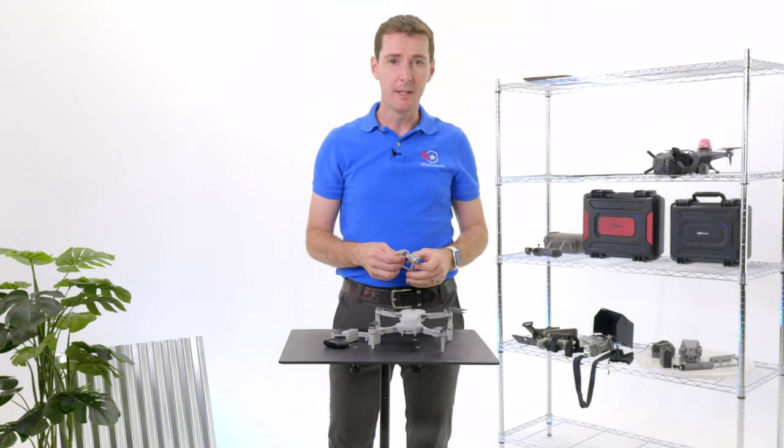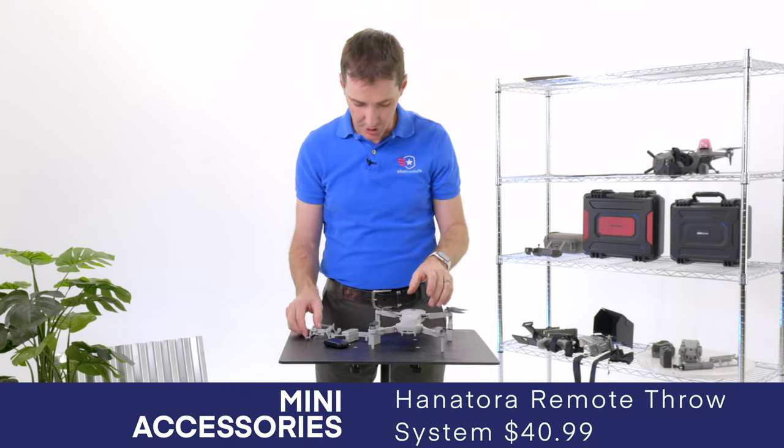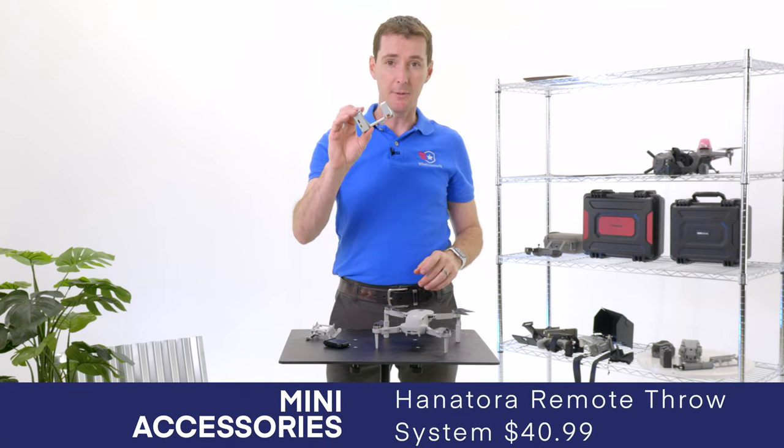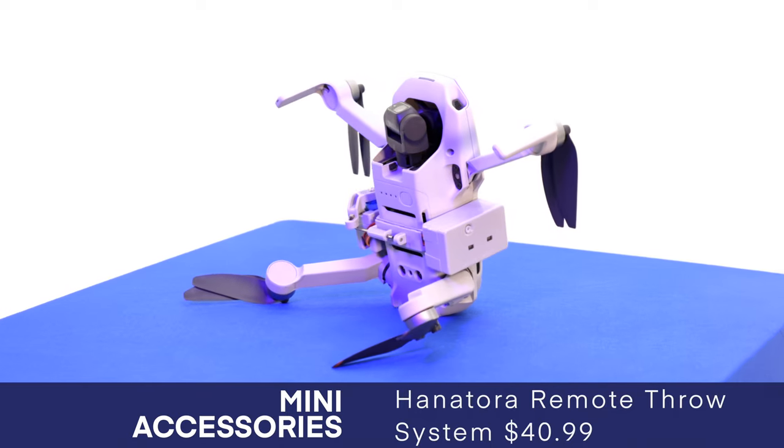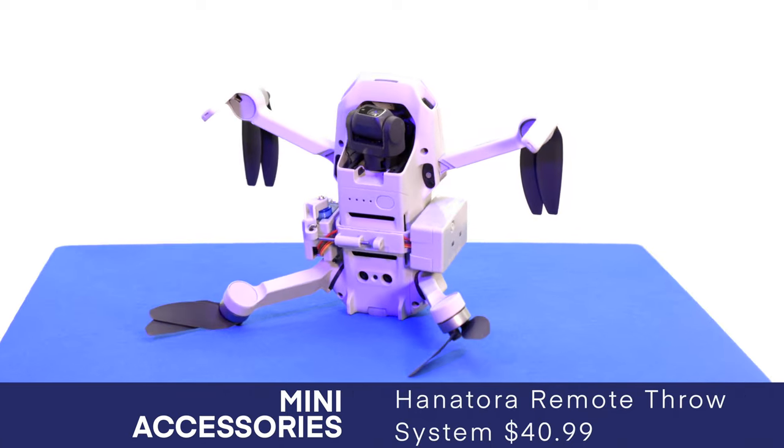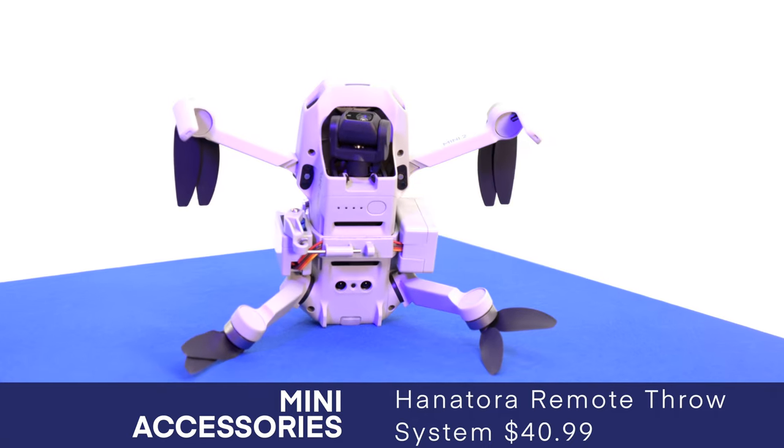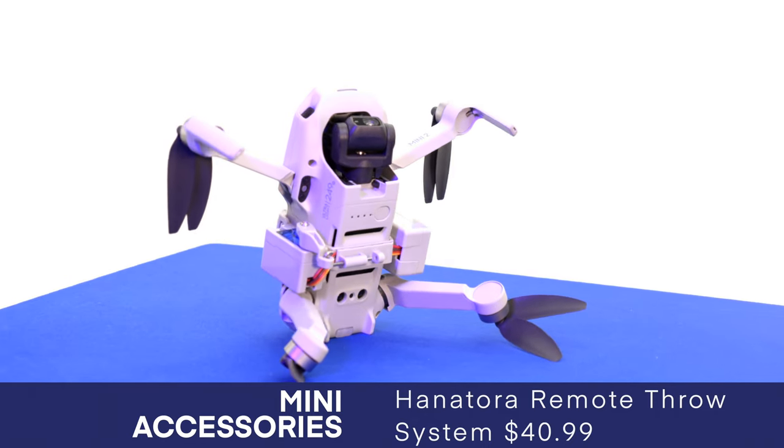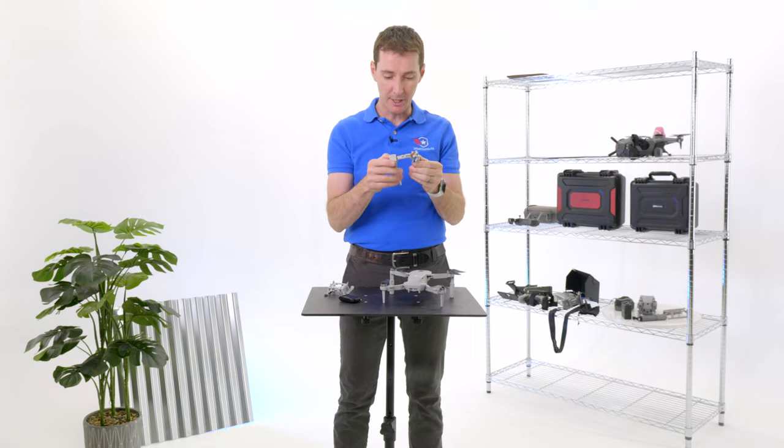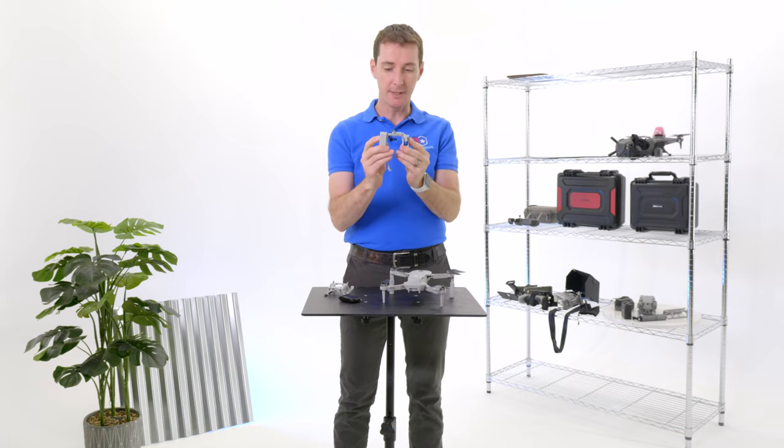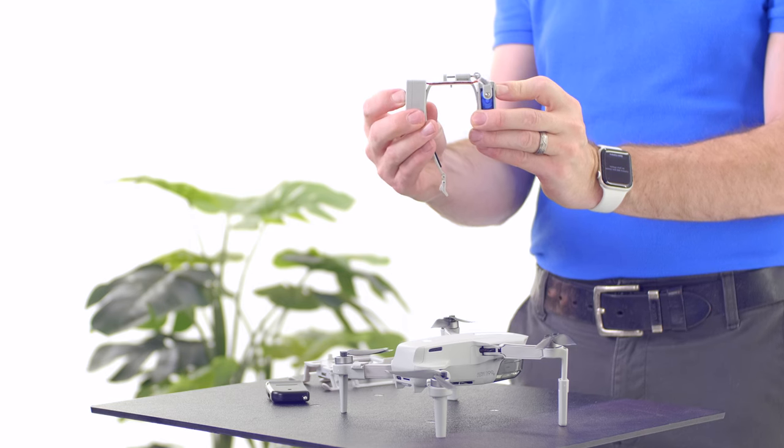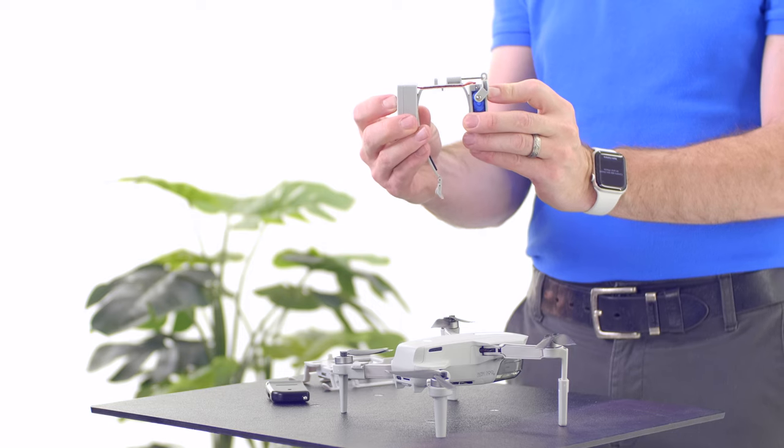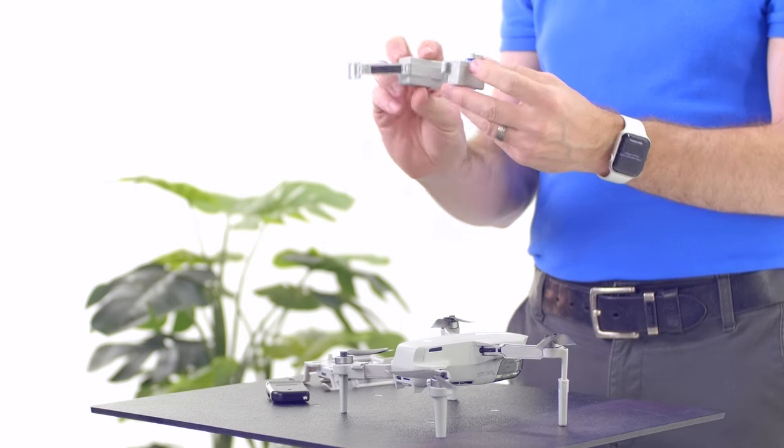The first thing is going to be our remote throw system, which is what I'm holding in my hand. This is not cheap. This is the most expensive accessory that we have. Is it worth it? Not sure. It's cool. Is it $41 cool? I'm not sure. But this comes with several things. It comes with this remote system, which has a servo right here. I'm going to turn it on. There's a button on the side. Then you can push on the button and you can see what happens. As I actuate it, you can see that the pin comes in and out of its receptacle.